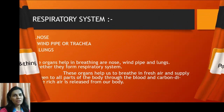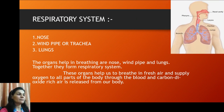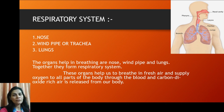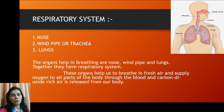Now we will move to the first topic: the respiratory system. In the respiratory system, three body organs are included — nose, windpipe (we can also say trachea), and the third one, lungs. Together they form the respiratory system. These organs help us breathe in fresh air, supply oxygen to all body parts through our blood, and release carbon dioxide-rich air from our body.